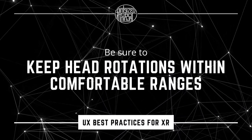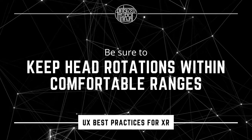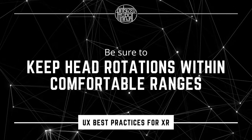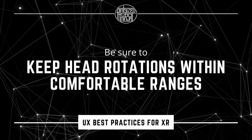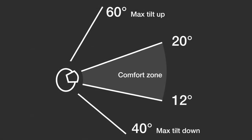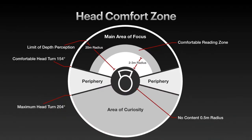Be sure to keep head rotations within comfortable ranges, especially when using gaze targeting or for longer durations or more repetitive tasks. Assuming a person is sitting or standing still and focusing on something, the most important elements should stay within a 20 degrees head tilt up and a 12 degrees head tilt down vertical space. The main elements should be within a 154 degree horizontal space.